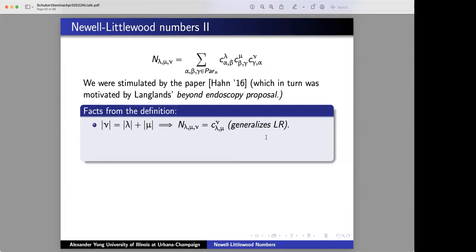Besides what Dave already noticed, that they're symmetric, another fact that's clear from the definition is that if you impose that size of nu equals size of lambda plus size of mu, then you can easily check that the NL numbers are equal to LR numbers. So therefore, this is in fact, not only an analog of the LR numbers, it's a straight up generalization.